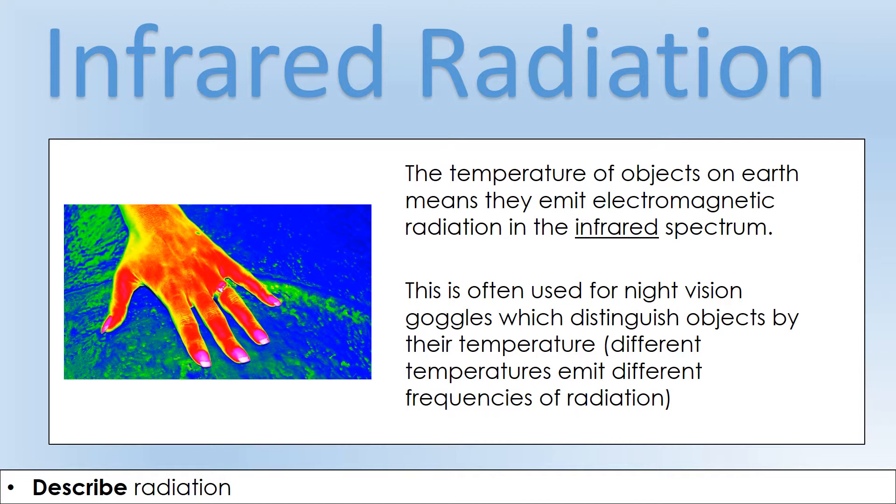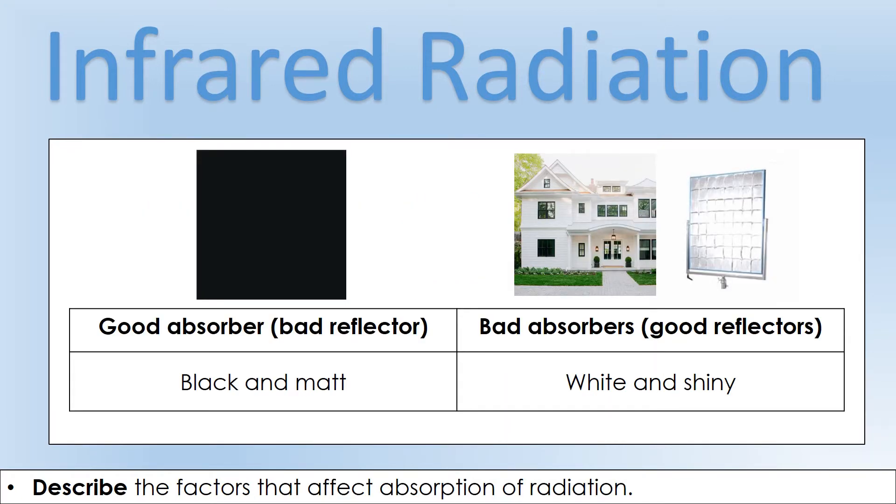We can change the amount of energy that an object can emit or absorb by changing some properties. Temperature is one thing that will affect how much energy an object emits, but we can also change other properties. If we want an object to absorb infrared radiation, we're going to make it black, which increases absorption, and we're also going to make it matte, which is basically the opposite of shiny.